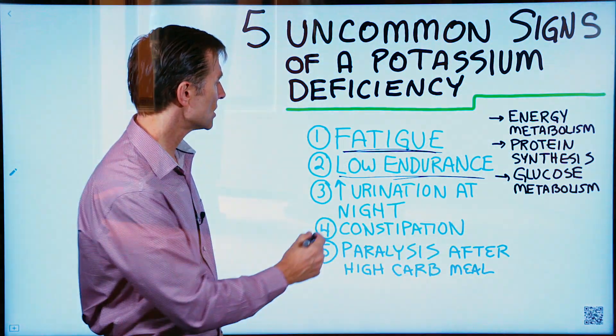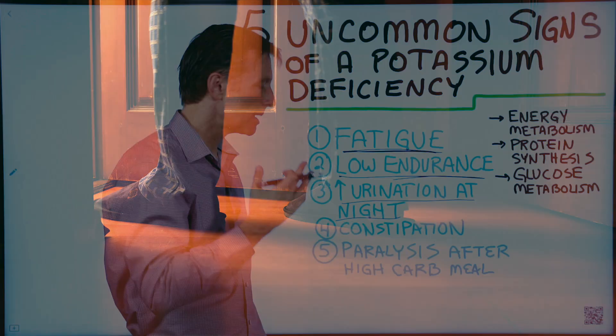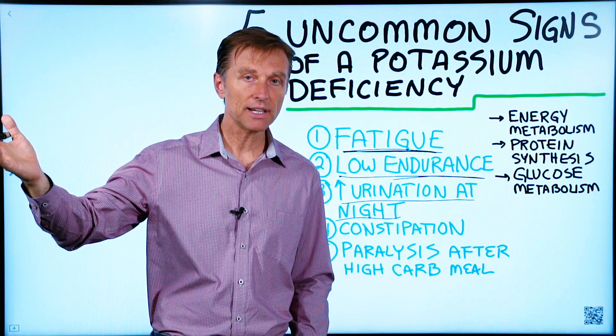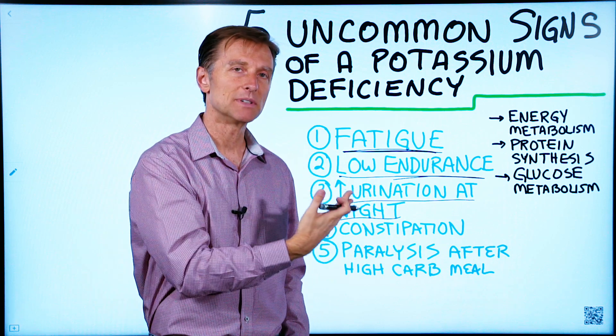Number three, increased urination at night. So many times we're thinking diabetes or prediabetes, but it could be a potassium deficiency.